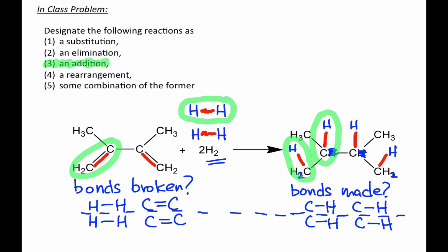We describe this by saying that the two hydrogen atoms, or the H2 molecule, adds across the carbon-carbon pi bond. And this happens twice to give us the product.